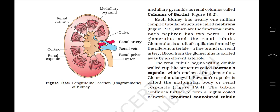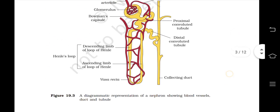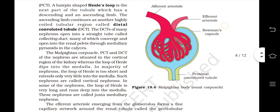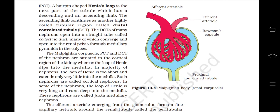The tubule continues further to form a highly coiled network called the proximal convoluted tubule (PCT), followed by a hairpin-shaped Henle's loop with a descending and ascending limb. The ascending limb continues as another highly coiled tubular region called the distal convoluted tubule (DCT). The DCTs of many nephrons open into a straight tube called the collecting duct, which converges and opens into the renal pelvis through medullary pyramids into the calyces.